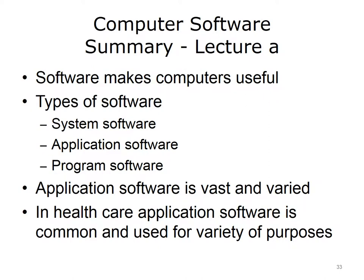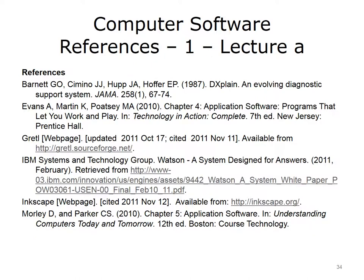This concludes Lecture A of the Unit on Computer Software. In summary, this lecture covered software that makes a computer useful. There are three major types of software — application, system, and program software. There are many different types of application software. In healthcare, the use of application software is very common and it is used for a variety of purposes.